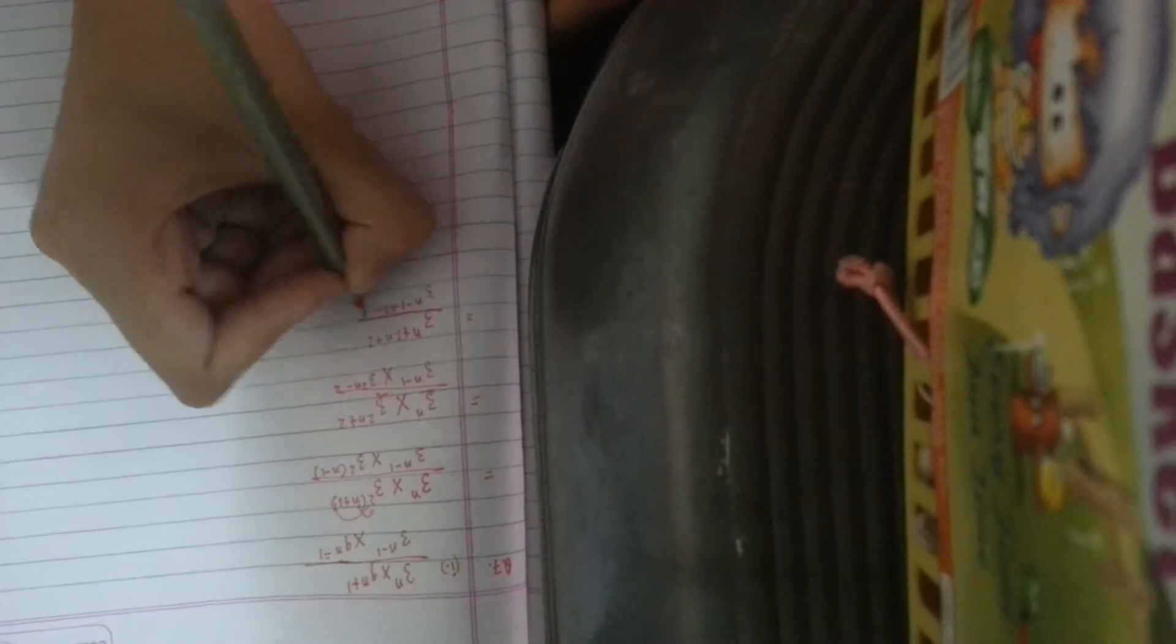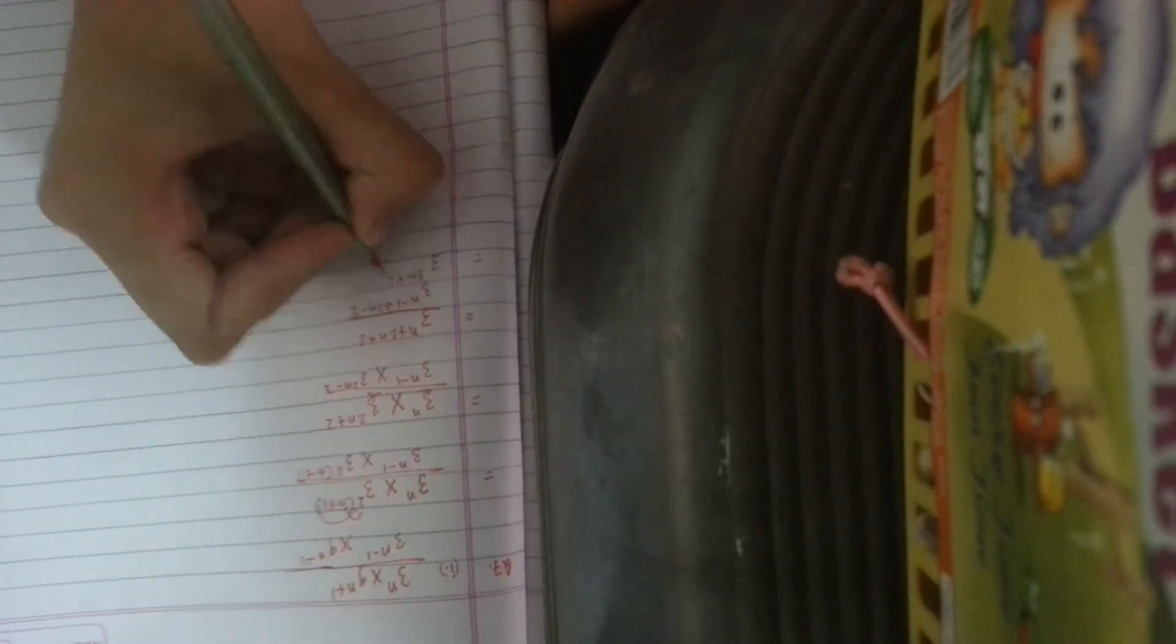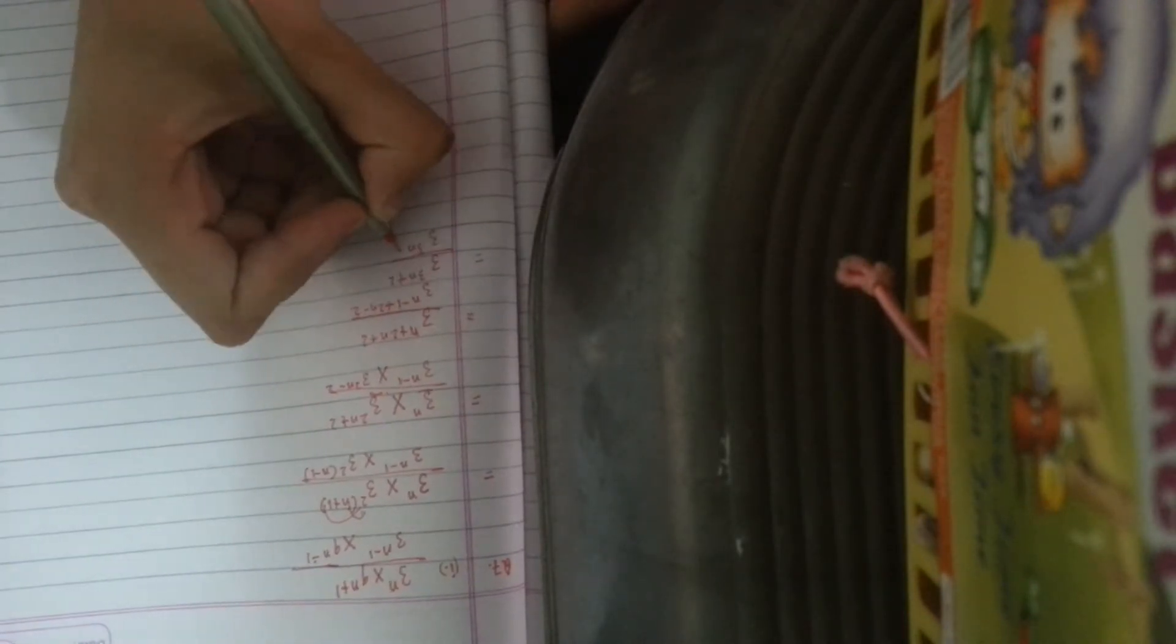And similarly for the denominator, n minus 1 plus 2n minus 2. Now we have 3 raised to the power 3n plus 2 divided by 3 raised to the power 3n minus 3.